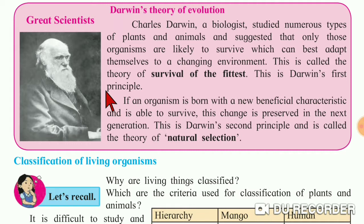It means those organisms which are best adapted to a changing environment are likely to survive. Those organisms which adapt themselves to a changing environment in order to stay alive — that is called the theory of survival of the fittest. This is Darwin's first principle.